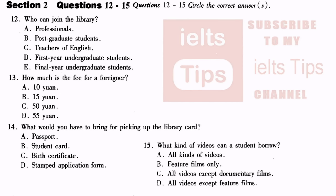Section two. You are going to hear a conversation between a librarian and an applicant. As you listen to the conversation, answer questions 12 to 15. Look at questions 12 to 15. Now listen to the conversation and answer questions 12 to 15. Good morning, sir. Good morning. May I help you? Yes, I would like to get some information about this library. You can join the library. Teachers of English, postgraduate and final year undergraduate university students and professionals may apply for membership.